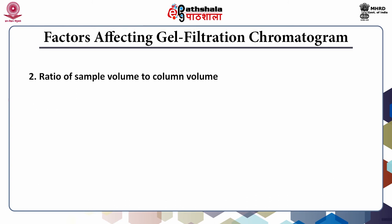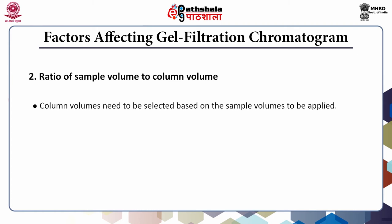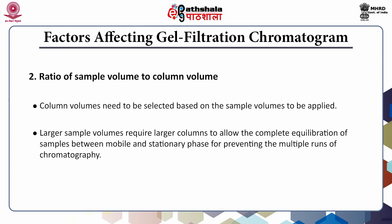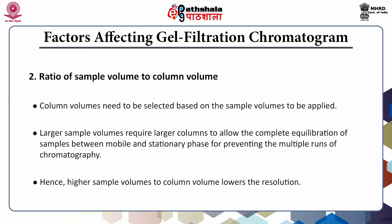The second factor is the ratio of sample volume to column volume. Column volumes need to be selected based upon the sample volumes to be applied — these two are interrelated. Larger sample volumes require larger columns to allow complete equilibration of samples between mobile and stationary phase, preventing multiple runs. Higher sample volumes to column volume lowers the resolution, which is why only 0.5 to 4 percent of the column volume should be used as sample volume.